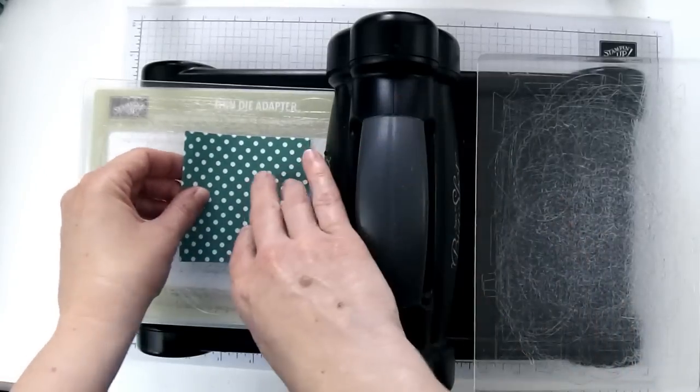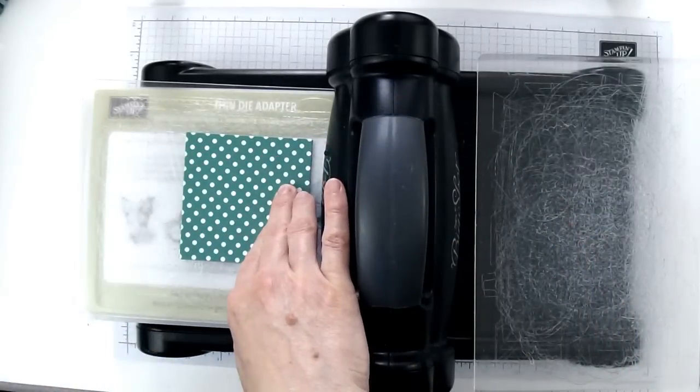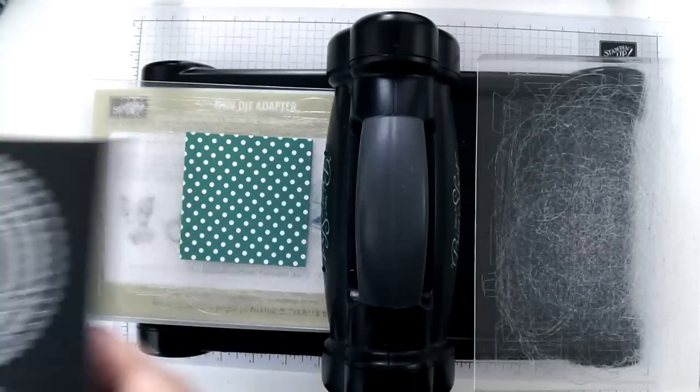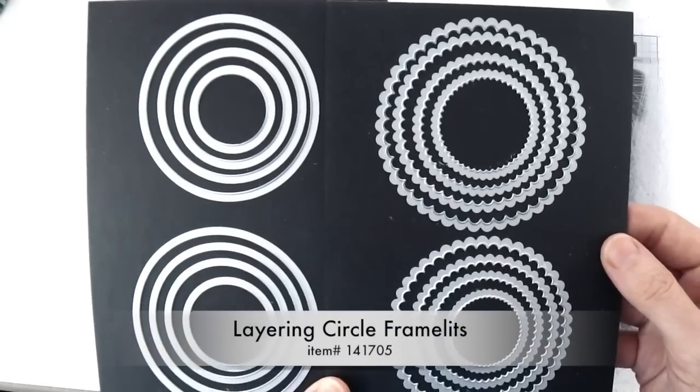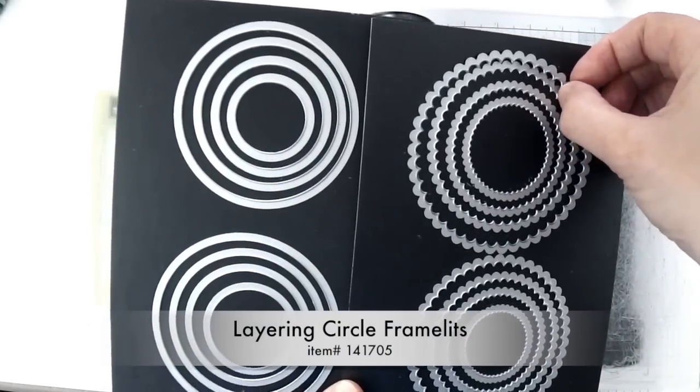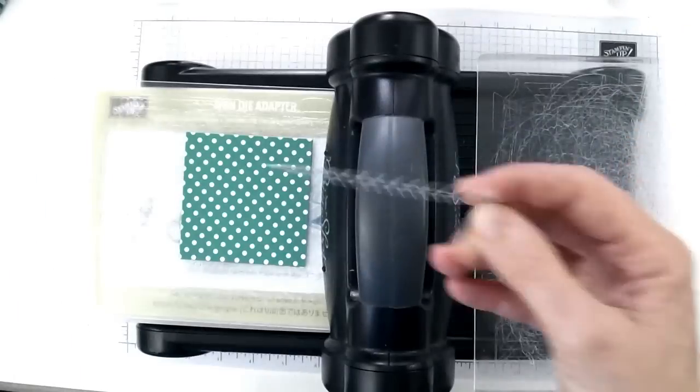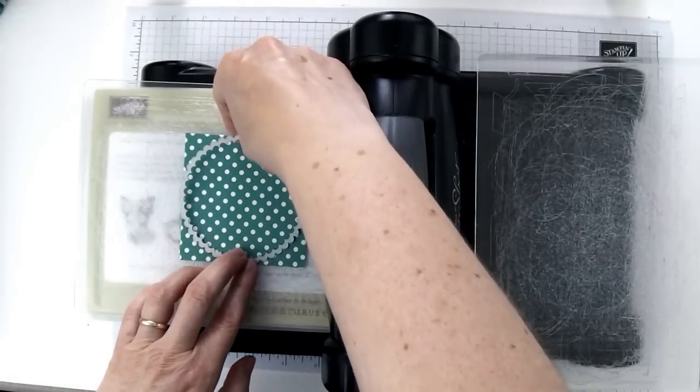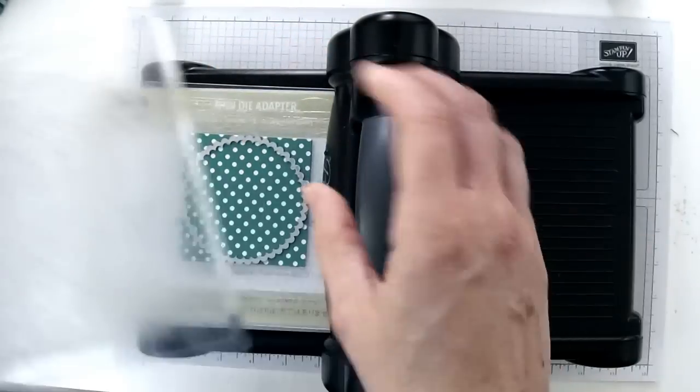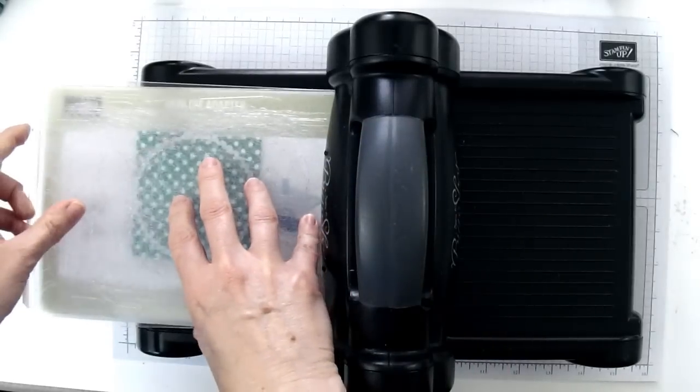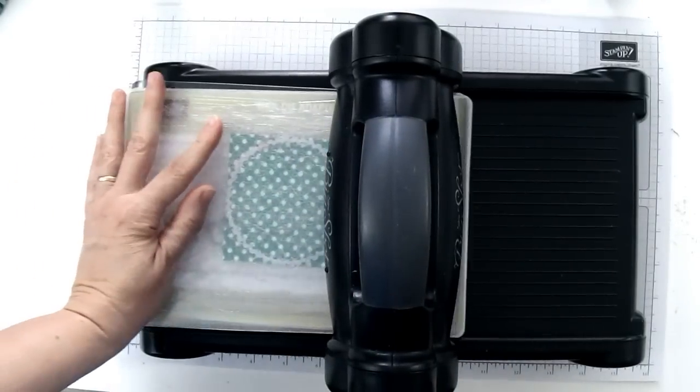So I've just got these two pieces stacked and I'm going to put them right onto my cutting plate and then we're going to be using the scalloped circles from the layering circles framelits. I'm going to need the largest scalloped circle and that should just fit on your three and a quarter inch square perfectly. So just center it on there and then put one more cutting plate on top and then run it through.